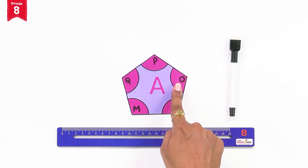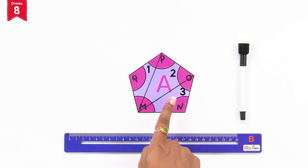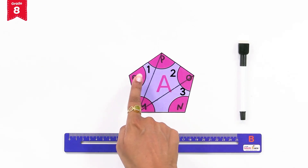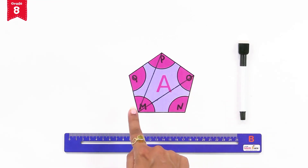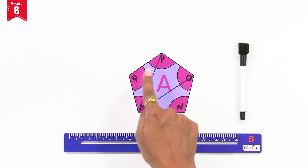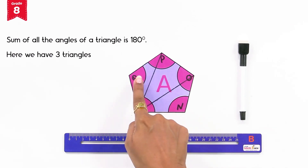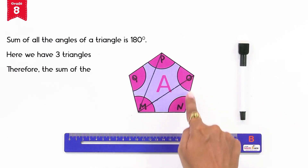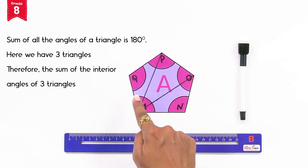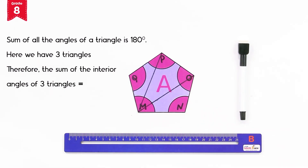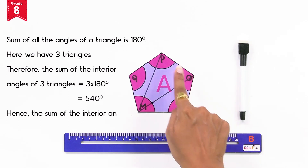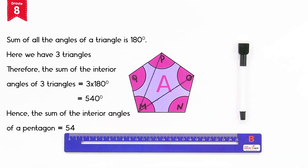Let's join vertex M with vertex P and vertex O. We observe that three non-overlapping triangles are formed: triangle MNO, triangle MOP, and triangle MPQ. We know that the sum of all angles of a triangle is 180 degrees. Here we have three triangles, therefore the sum of the interior angles of three triangles is 3 multiplied by 180 degrees, which equals 540 degrees. Hence the sum of the interior angles of a pentagon is 540 degrees.